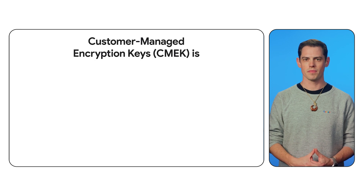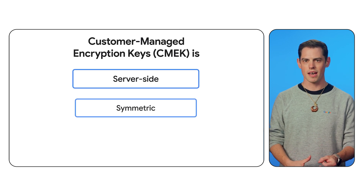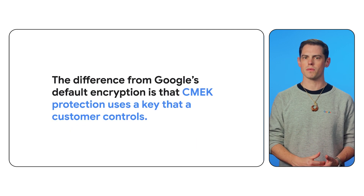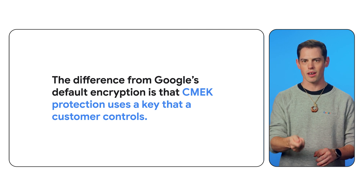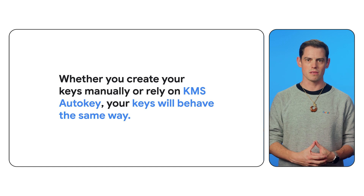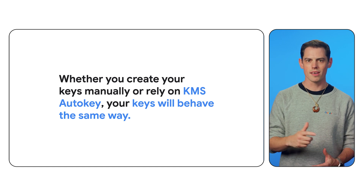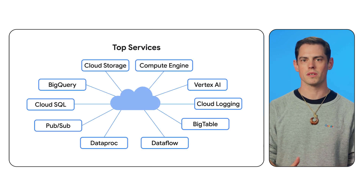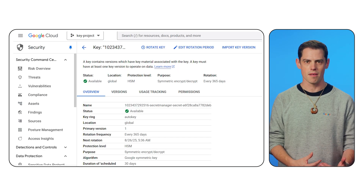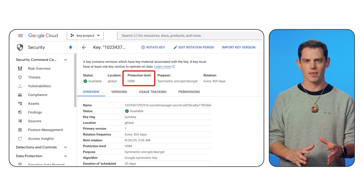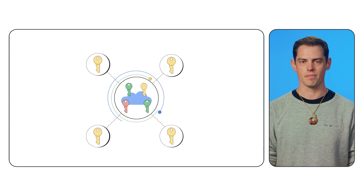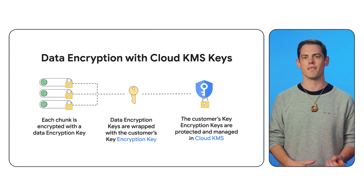Fortunately, Google's CMEK integrated services make this straightforward. Like Google's default encryption, CMEK is server-side symmetric envelope encryption of customer data. The difference is that CMEK protection uses a key that a customer controls. Whether you create your keys manually or rely on KMS AutoKey, your keys will behave the same way. Cloud services with a CMEK integration use keys you create in Cloud KMS. Key material never leaves the Cloud KMS system boundary, and your symmetric keys are used to encrypt and decrypt in the envelope encryption model.